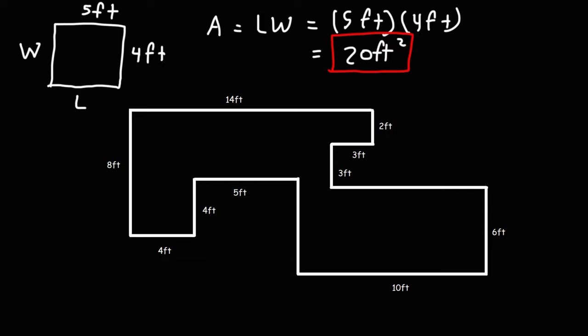So that's how we can calculate the square footage of a rectangular area. What we're going to do in this problem is we're going to break up this composite figure into smaller sections, smaller rectangles. We're going to calculate the area of each rectangle, and then find the sum.